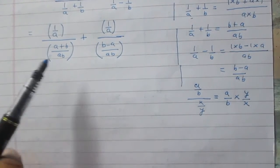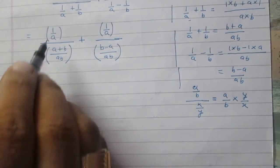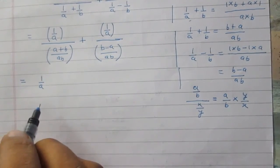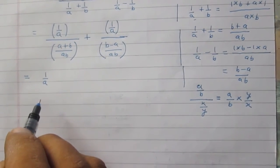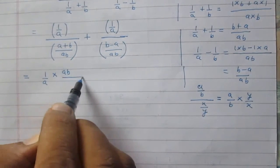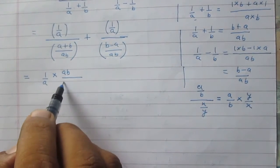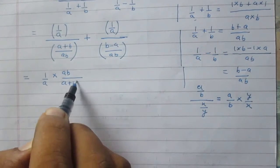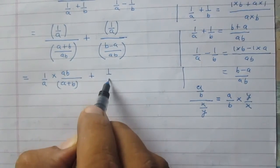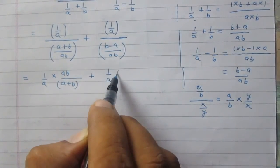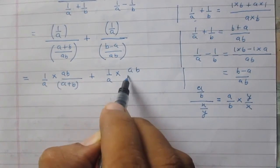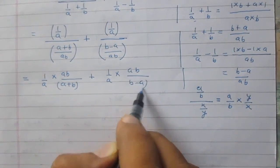Using this rule, the first part gives 1 upon a multiplied by the reciprocal of the denominator, which is ab upon a plus b. Similarly, the second part simplifies to 1 upon a multiplied by ab upon b minus a.